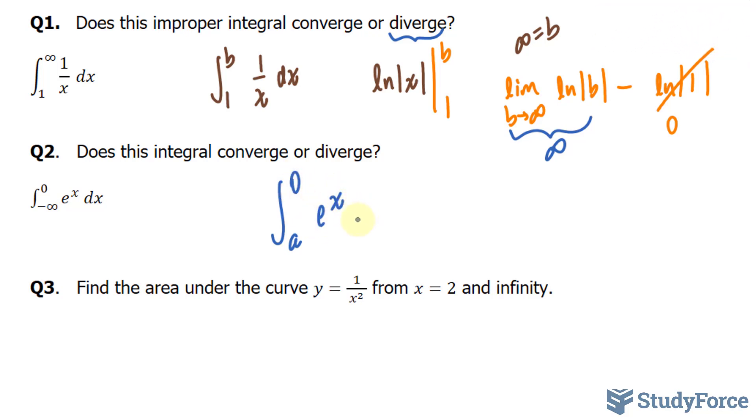Finding the integral of e to the power of x is easy. It's e to the power of x. And now I'll evaluate this at 0 and at a. If I evaluate it at 0, I end up with 1.